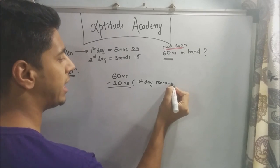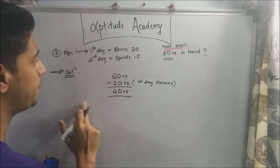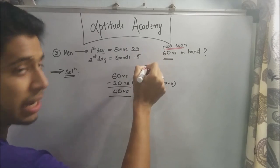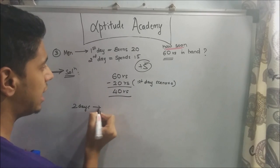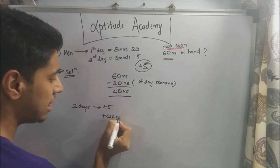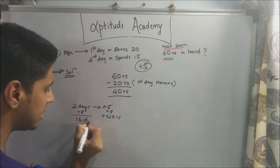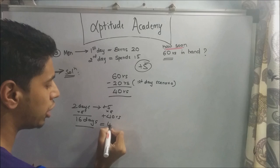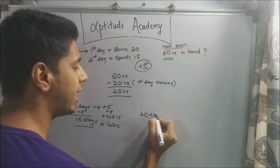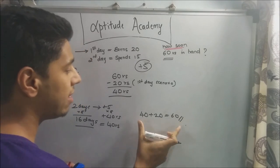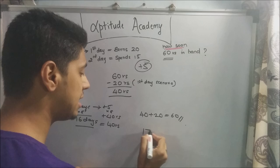That leaves 40 rupees. Using the previous method, after every two days he saves +5 rupees, so to save 40 rupees he must repeat this 8 times — that's 16 days. After 16 days he has 40 rupees, then on the 17th day he earns 20, giving 40 + 20 = 60 rupees. So the answer is not 24 days — it is 17 days.